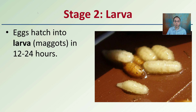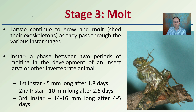Progressing on, we have the larval stage, where the eggs hatch into larvae — typically referred to as maggots — in the first 12 to approximately 24 hours. The larvae continue to grow and they'll molt, which means they shed their exoskeleton as they pass through the various instar stages.